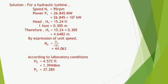For the hydraulic turbine: speed n1 = 95 rpm, power p1 = 26.845 megawatt = 26.845 × 10³ kilowatt, head h1 = 15.24 feet. Since one foot = 0.305 meter, h1 = 15.24 × 0.305 = 4.6482 meter. Using the expression for unit speed: nu = n1 / √h1, we get nu = 44.063.